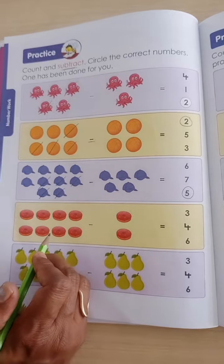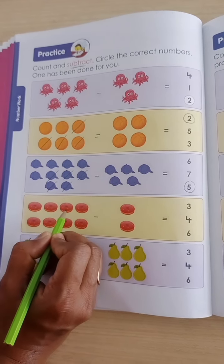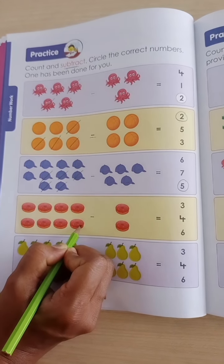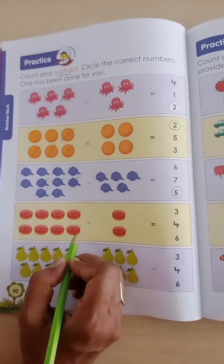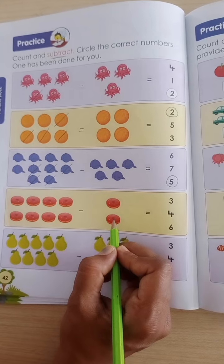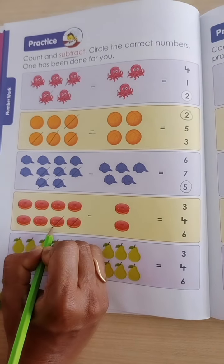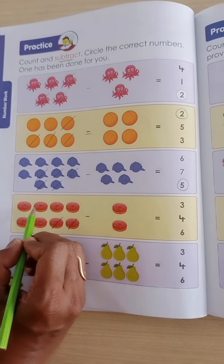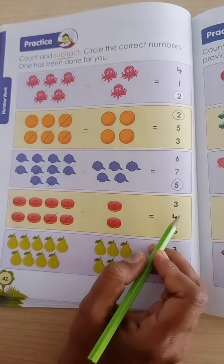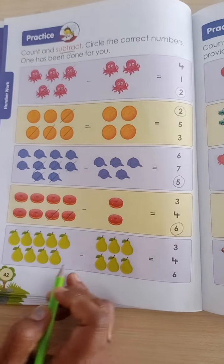Now here, how many cakes are there? 1, 2, 3, 4, 5, 6, 7, 8. Now from 8 cakes, how many cakes will we cut? 1 and 2. We will cut 2 cakes: 1, 2. Now how many cakes are left? 1, 2, 3, 4, 5, 6. So 6 is the answer. Yes, 6 is here. So we are going to circle this.